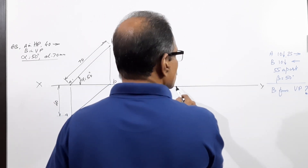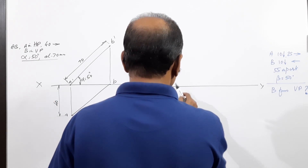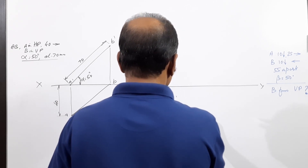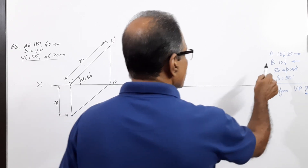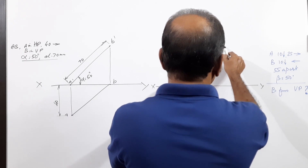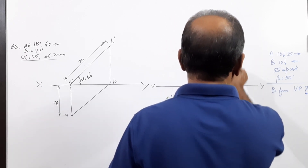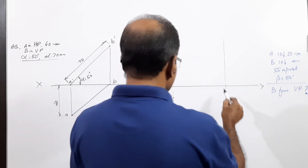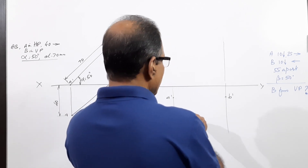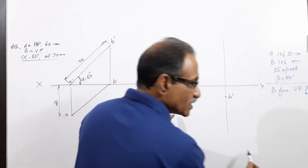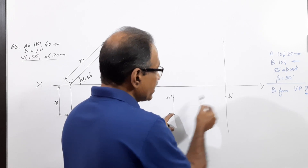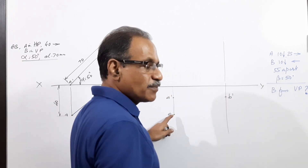A is 10mm below HP and 25mm in front of VP — so mark A-dash 25mm above XY and A 10mm below XY. 55mm away draw another projector, and on that projector 10mm below XY locate B-dash. Then at A draw a line at 50 degrees — should it go upwards or downwards?